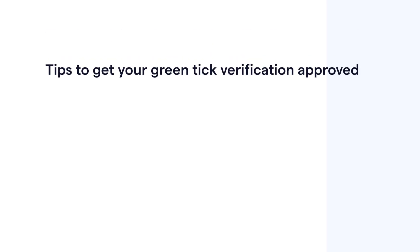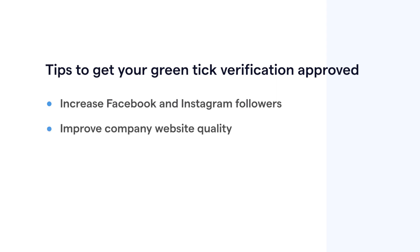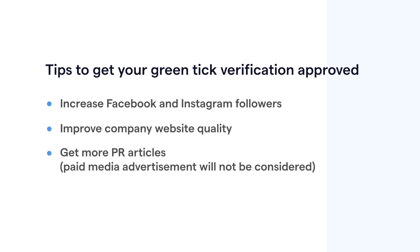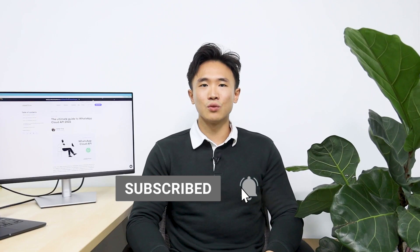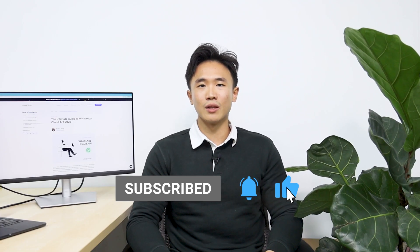While waiting to submit another official business account request, we advise you to continue to grow your online presence. Specifically, try to increase your organic likes on your Facebook page, improve your website quality, and gain more organic media exposure. Quality rating and messaging limits also affect the request result. Check out the next video to learn how to maintain high quality and increase your limit.